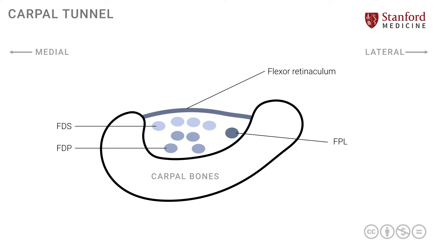Before we put the nerve in place, let's look at the final tendon, which is the FCR — the flexor carpi radialis. Classically and strictly speaking, this doesn't really cross through the carpal tunnel, but it is in very close relationship to the flexor retinaculum, because the flexor retinaculum on its more lateral side splits to surround the FCR tendon.